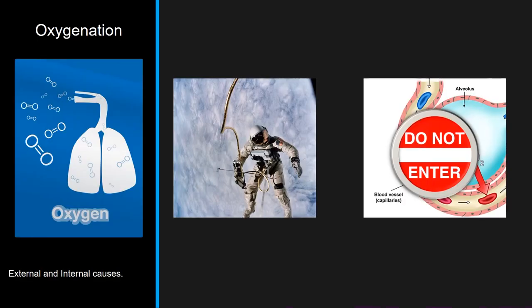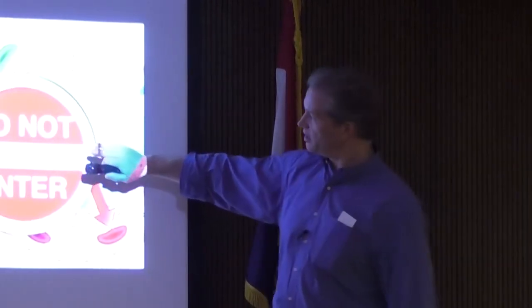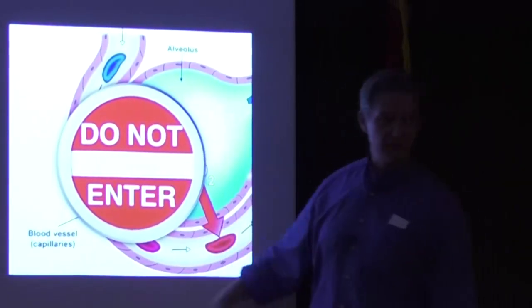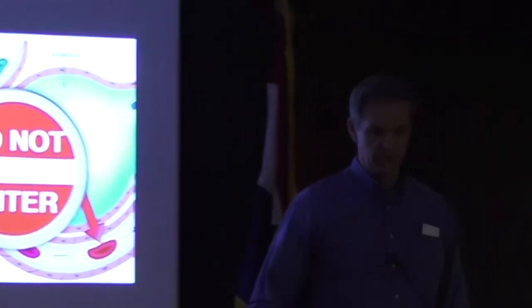Other ways to disrupt oxygenation: deprive the patient of oxygen by putting them in an oxygen-deprived atmosphere, cause pneumonia to fill the bronchi and alveoli, give them a PE preventing blood flow - one of which is a VQ mismatch and the other a shunt.